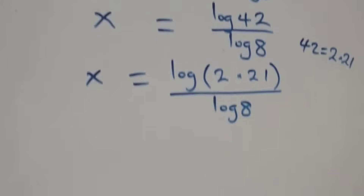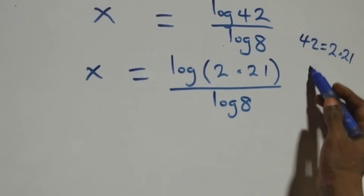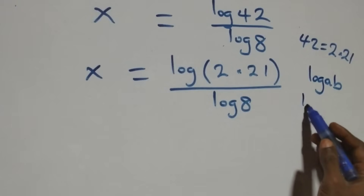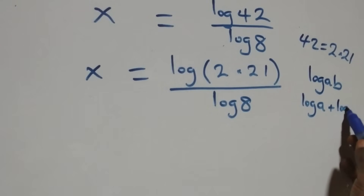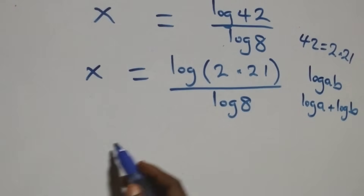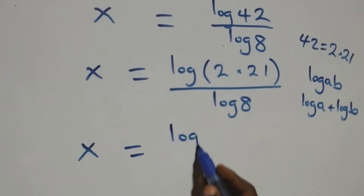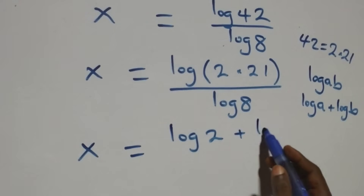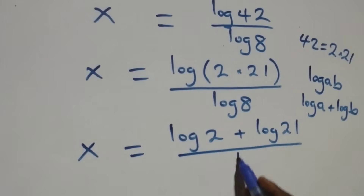This follows from the logarithm product law: log of a times b is the same as log a plus log b. So all we have becomes x equals log 2 plus log 21, over log 8.